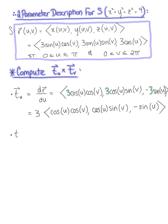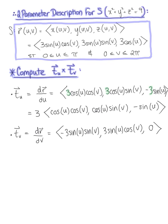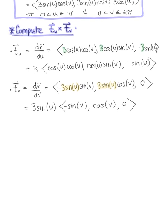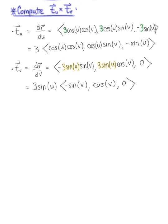Now we find the partial derivative of r with respect to v. Differentiating with respect to v, we get −3 sin(u) sin(v), 3 sin(u) cos(v), and 0. Each component has a scalar multiple of 3 sin(u), so pulling that out: r_v = 3 sin(u) · (−sin(v), cos(v), 0). Factoring out those scalar multiples will make computing the cross product of these two vectors a little bit easier.